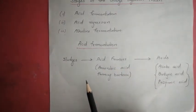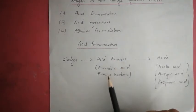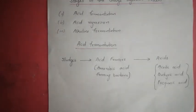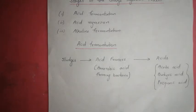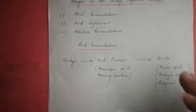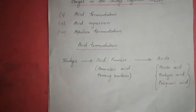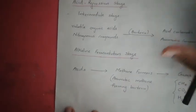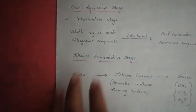The sludge is stabilized by acid formers, that is anaerobic acid-forming bacteria, which convert it into acids like propionic acid, acetic acid, butyric acid, etc. In this stage the pH value should be less than 6.